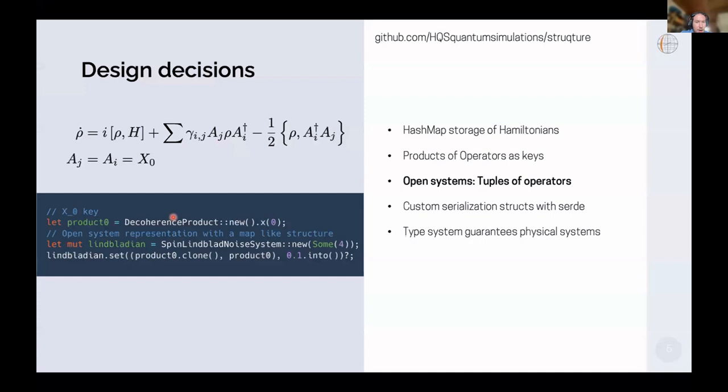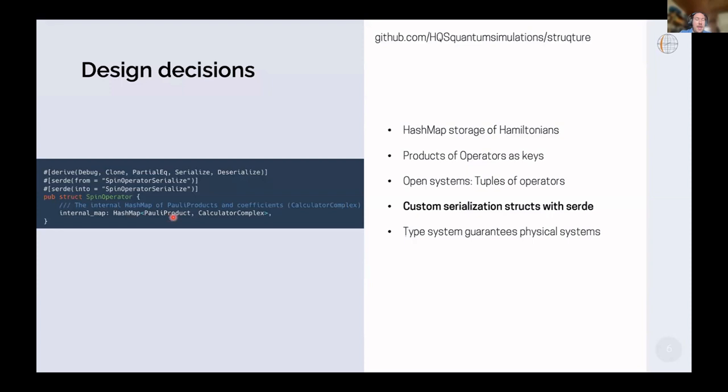Then the next decision we made is how do we serialize. Of course one of the strengths of the Rust ecosystem, besides all of the other strengths, is the Serde serialization library. We decided to just go with Serde because it gives us a wide range of serialization targets. The only thing is that we use some specialized serialization structs that customize the internal representation a little bit to deal with the fact that JSON typically doesn't deal well with HashMaps where the keys are not strings. We change this a little bit, but otherwise we can just use vanilla Serde, and that works really well.